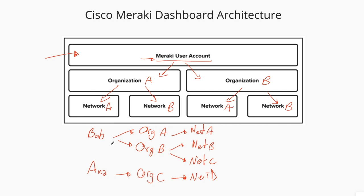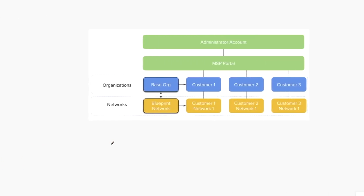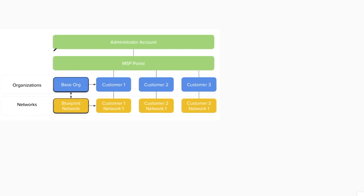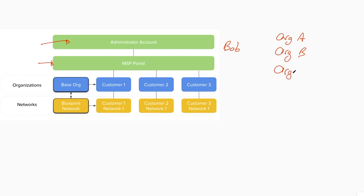That's at a high level. But then you have ways to mix, match, and see other usernames, other organizations, and other networks. There's something in the middle here — you can see it is the MSP portal, the Managed Service Provider portal. What it means basically is that you can see more than one organization when you're logged in. You have the same Meraki user account — called administrator accounts in this graph — and once you log in, if you have access to different organizations, you will see the MSP portal so you can select which organization you want to log into.